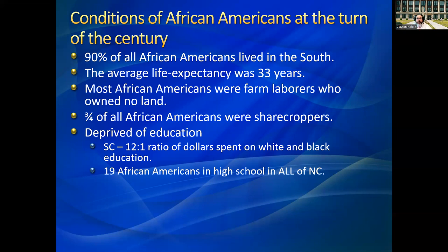African Americans were also being deprived of access to education. In South Carolina, the state spent $12 on white education for every $1 spent on black education. In North Carolina, in the entire state in 1916, there were a total of 19 African Americans enrolled in high schools. This speaks to the problem of access to education — there simply isn't a moment in the lives of black folks where they see relevance in education. If the state is not putting equal money into this process, many African American parents said there's no point in sending our children to school.